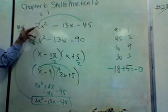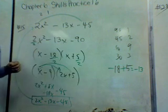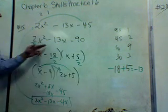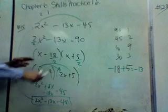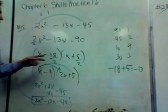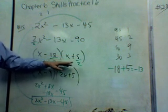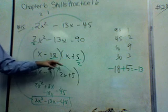It worked out just right. So we have to follow that swing method to see if it works. We'll summarize the steps. First of all, you swing 2 times 45, negative 45, you get negative 90. You rewrite it, 2x² - 13x - 90. And you deal with the factors of 90 to see which ones will subtract to be the middle term. 18 and 5 work. So we have x - 18 and x + 5 because negative 18 plus 5 is negative 13.